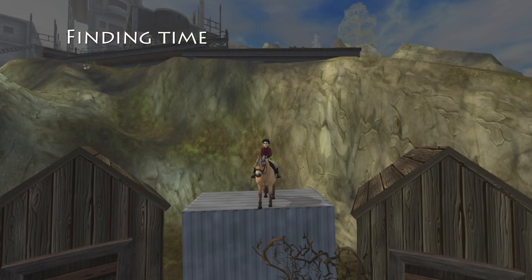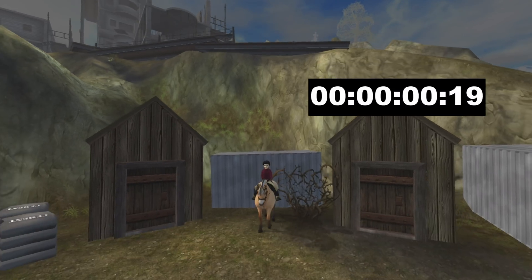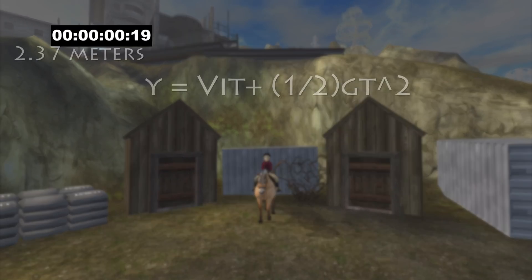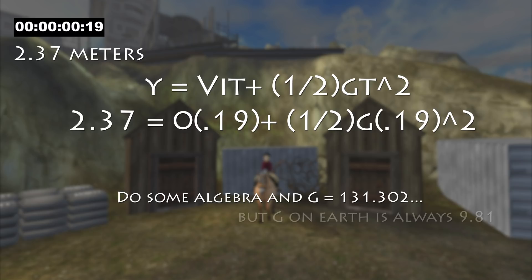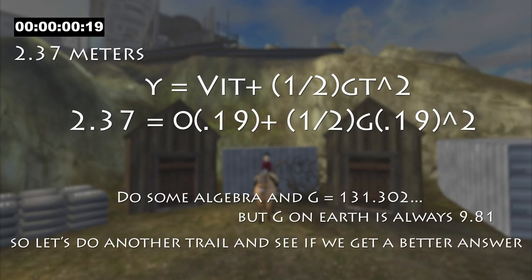The next part is just to find time, which is 0.19 seconds — extremely fast. Once we plug these values in and solve for g, it ends up being 131.3, which is a large number. On Earth, gravity is 9.81. The reason for this is that 0.19 is so small, there's too much room for error.